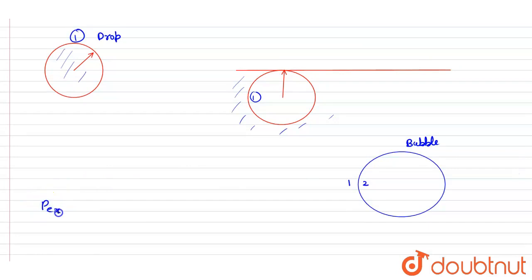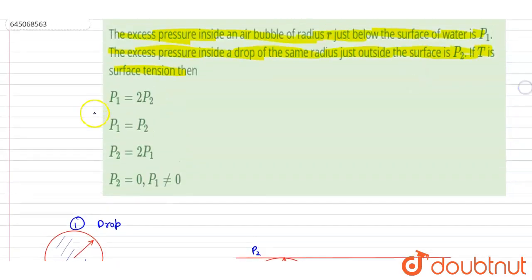So in both cases, the excess pressure P1 and P2 will be the same, that is 2T by r. Now you can see P1 equals P2 is our answer. So if you see here, B is the correct answer. Thank you.